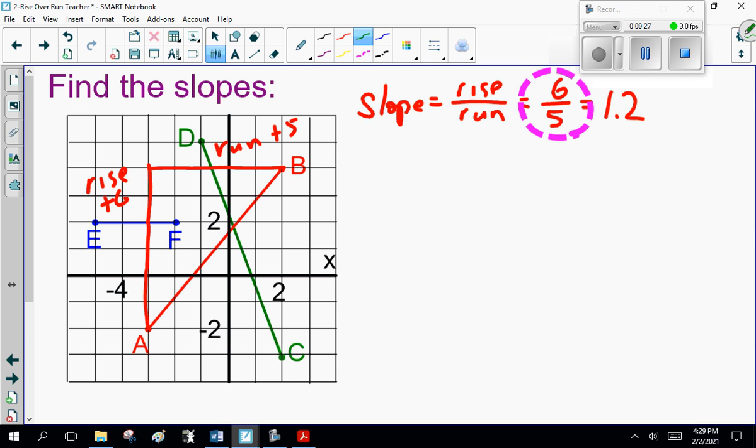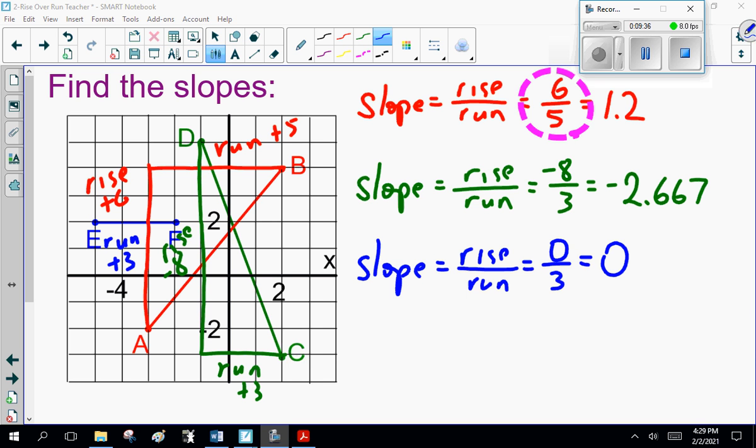Let's do the green one, CD. For the green line CD, I get a rise of minus 8, because it's going down 8 units. And the run is 3, going across 3. So leave it as minus 8 thirds. If you want to put it as a decimal, minus 2.667, I'm fine with that. I prefer a fraction, but I'm not going to argue with that.